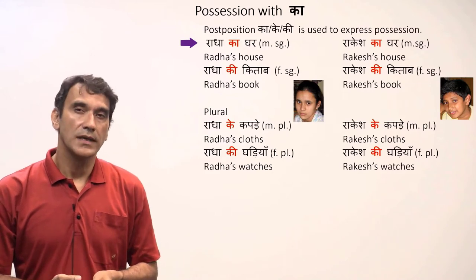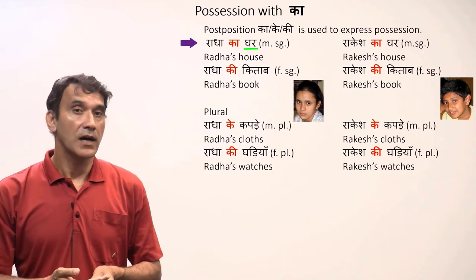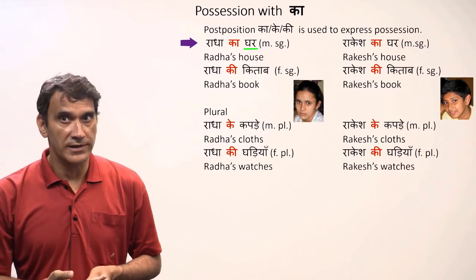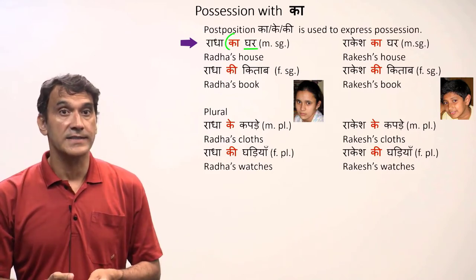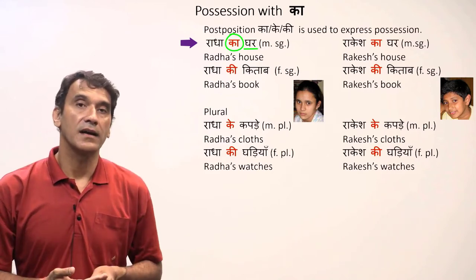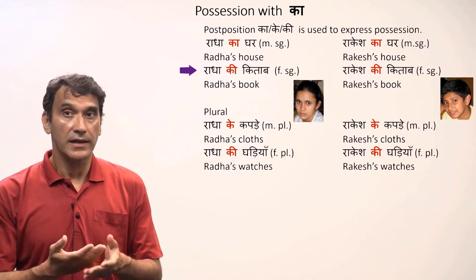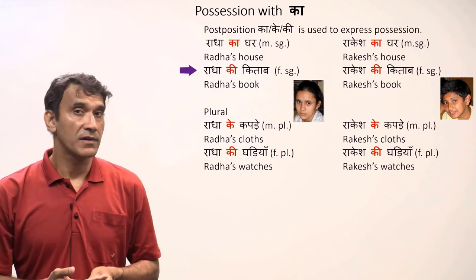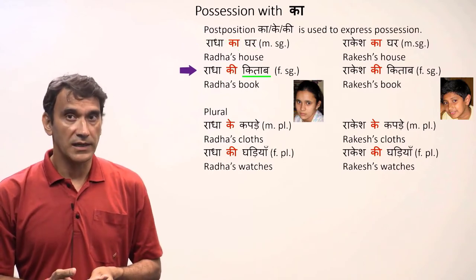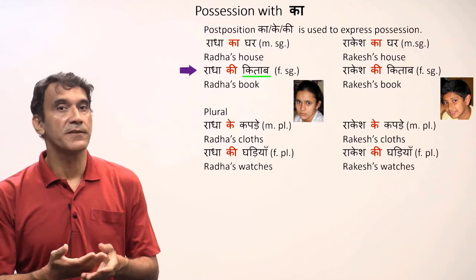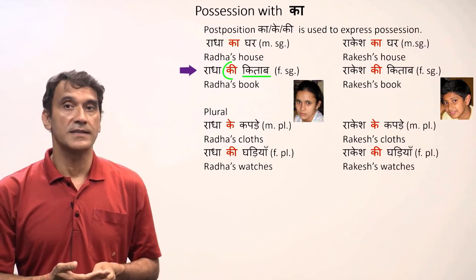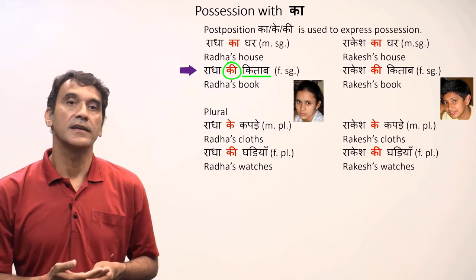Radha ka ghar — Radha's house. 'Ghar' (house) is a masculine singular noun, that's why it is 'ka': radha ka ghar. Radha ki kitab — Radha's book. 'Kitab' (book) is feminine, that's why it is 'ki': radha ki kitab.